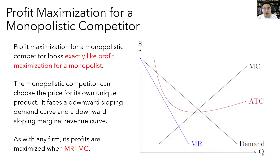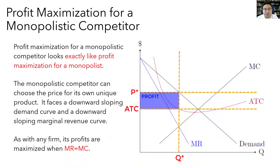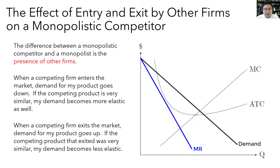Let's see how a monopolistic competitor will maximize its profits. The mechanics for how a monopolistic competitor maximizes profits is exactly the same as how a monopolist maximizes profits. They're going to choose the quantity for which marginal revenue equals marginal cost. And so in this diagram, profit is maximized at this quantity, and this would be the profit-maximizing price. The rectangle here is the profit. So it looks exactly the same as with a monopolist. And there's even some deadweight loss, given by this triangle, just like with a monopolist.